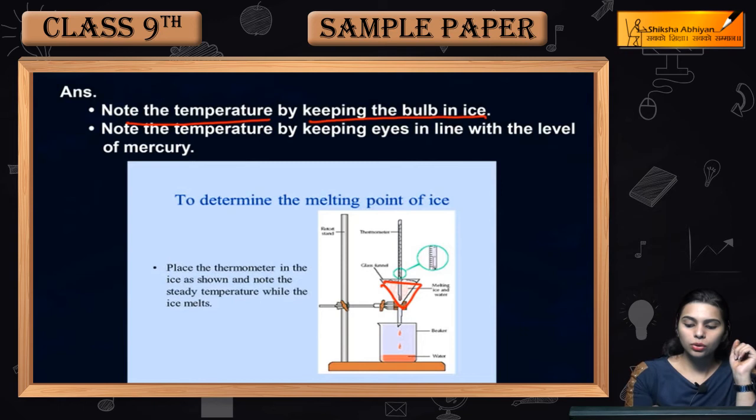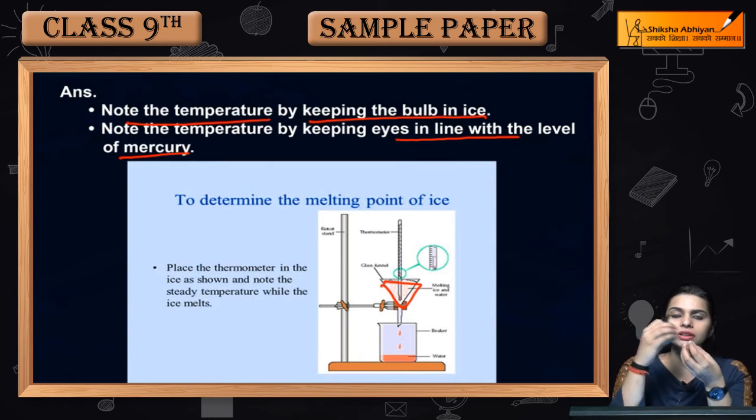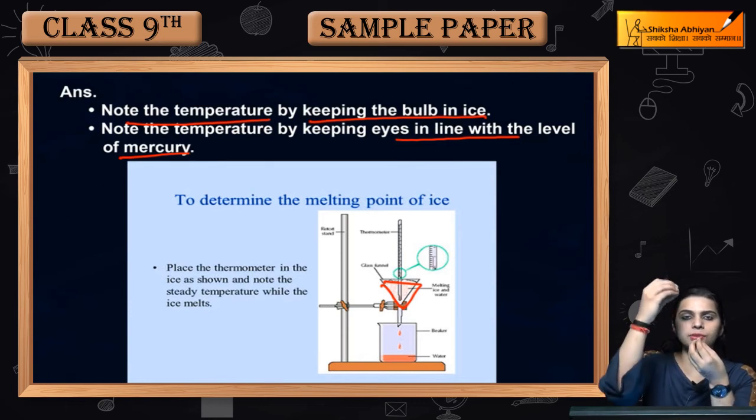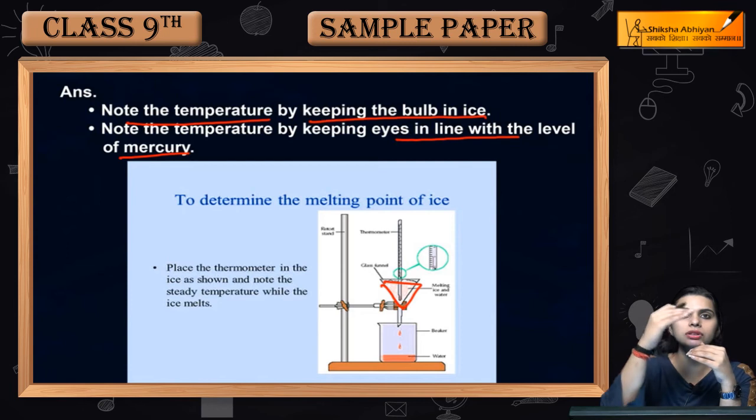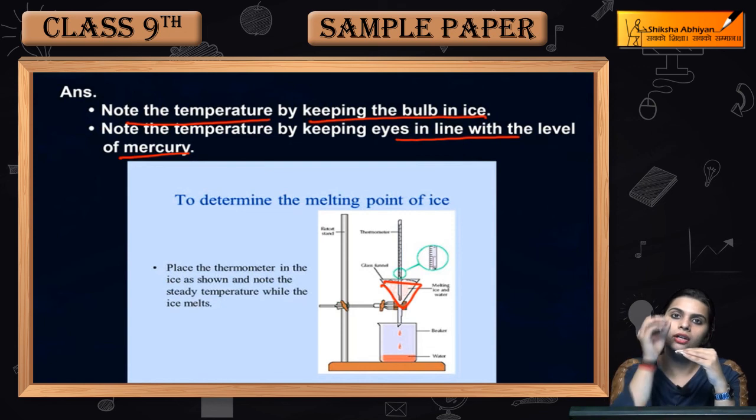Next is note the temperature by keeping the eyes in line with the level of mercury. Now when our bulb is in the thermometer, it is in ice. Because of this, the mercury level will go up or down. So we have to keep it at that level. We have to see that the mercury level is going up or below. The thermometer's range will be our temperature.